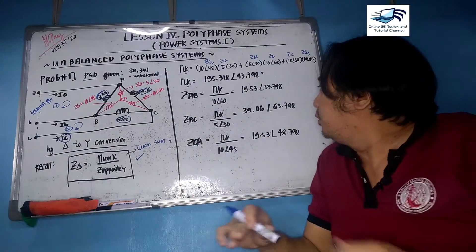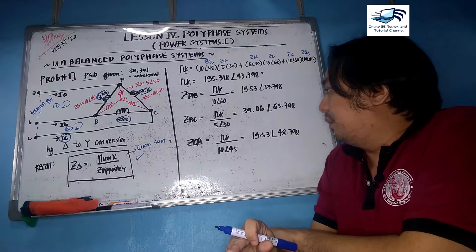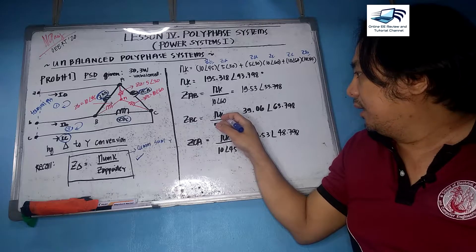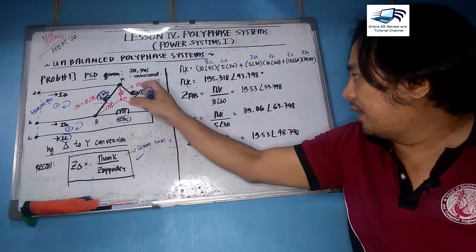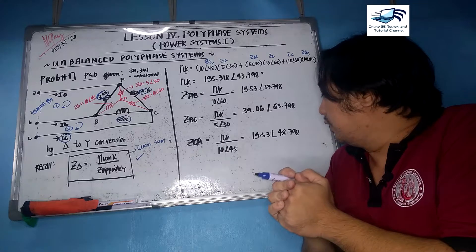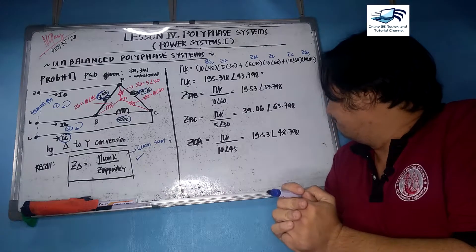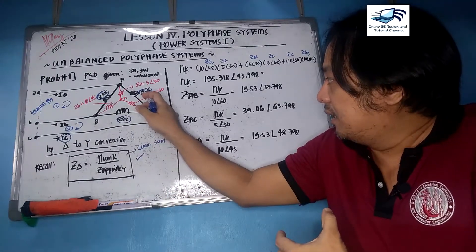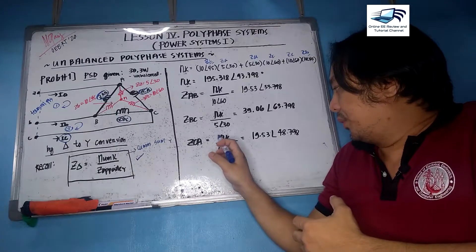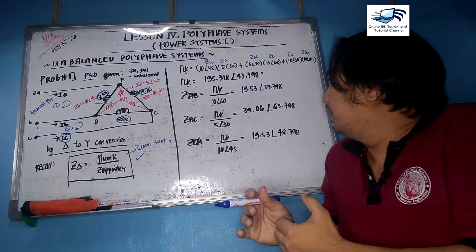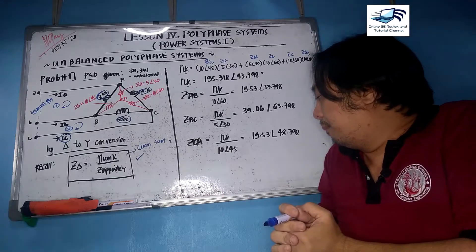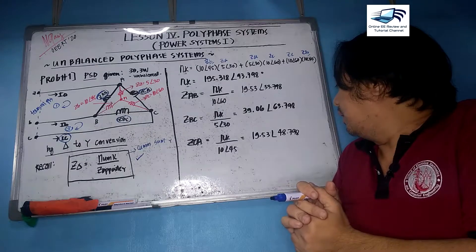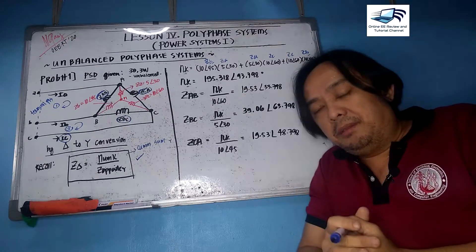ZAB = 195.318∠93.798° ÷ 10∠60° = 19.53∠33.798°. For ZBC, the opposite is 5∠30°, giving 39.06∠63.798°. For ZCA, the opposite is 10∠45°, so 195.318∠93.798° ÷ 10∠45° = 19.53∠48.798° ohms.